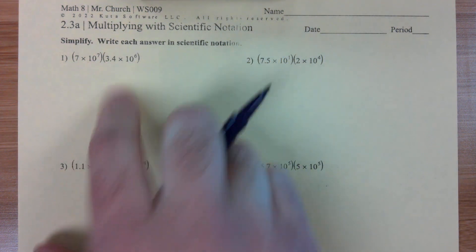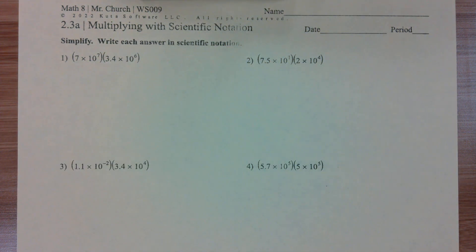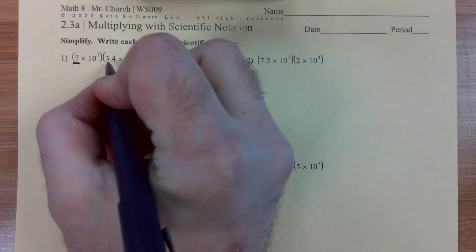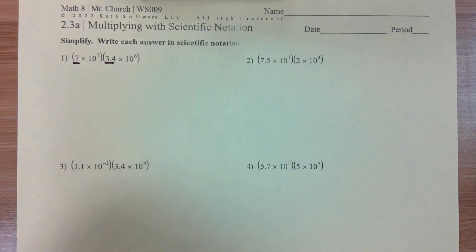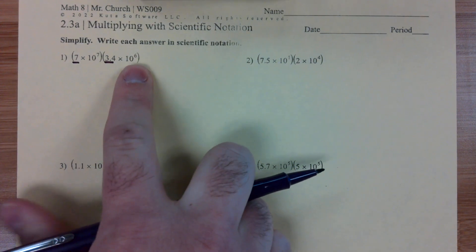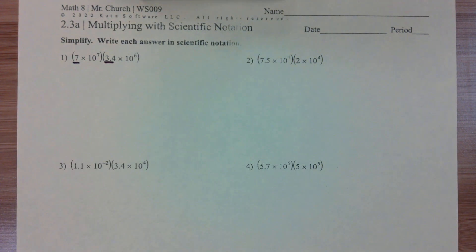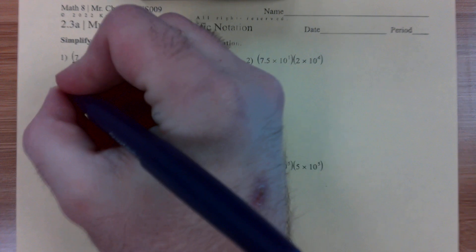So when we're multiplying two numbers in scientific notation, the big things are we're going to multiply our leading numbers together, we're going to add our exponents from our powers of 10, and then if we have to move our decimal in our new leading number, we're going to have to adjust our power of 10 as well by adding one to it.